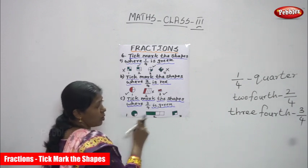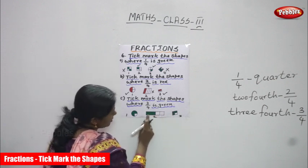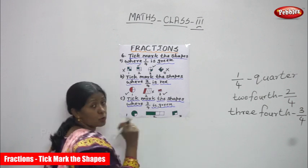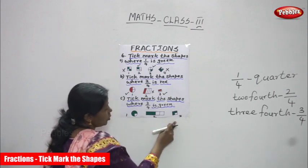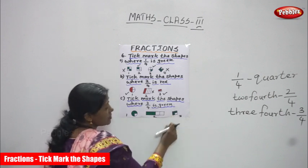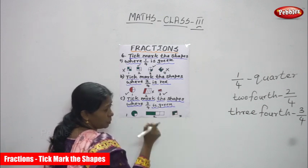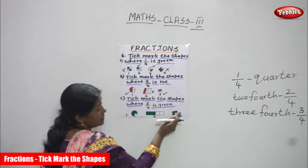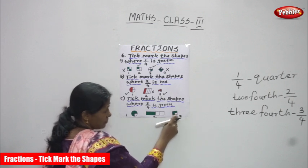The second diagram is a long rectangle cut into four parts. I shaded two parts in green color and the remaining two I didn't shade. The third diagram is a slanting square — I cut it into four equal parts and shaded three parts: first part green, second part green, third part green. One part is left unshaded.